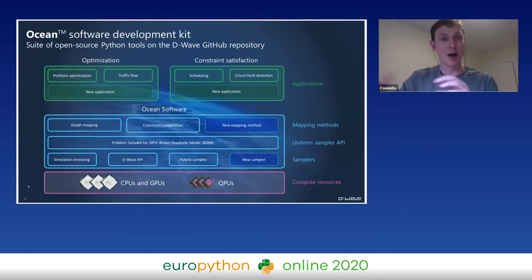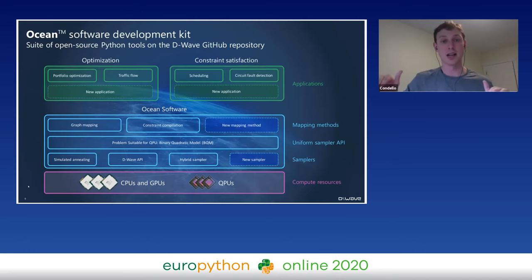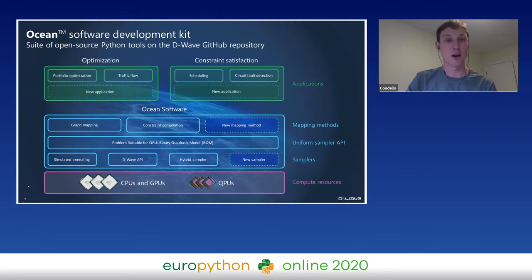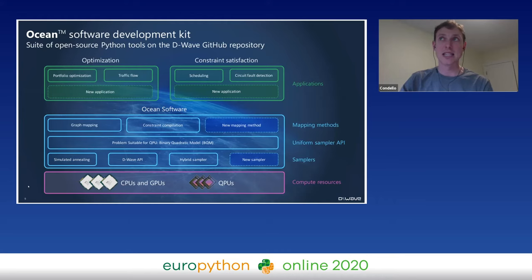I want to talk about how we organize our software stack. At the very bottom, we have a set of compute resources — CPUs, GPUs, just like normal. What's new and different when you start talking about quantum computing is the addition of the quantum processing unit. It's important to think of this QPU as another co-processor, similar to a GPU.